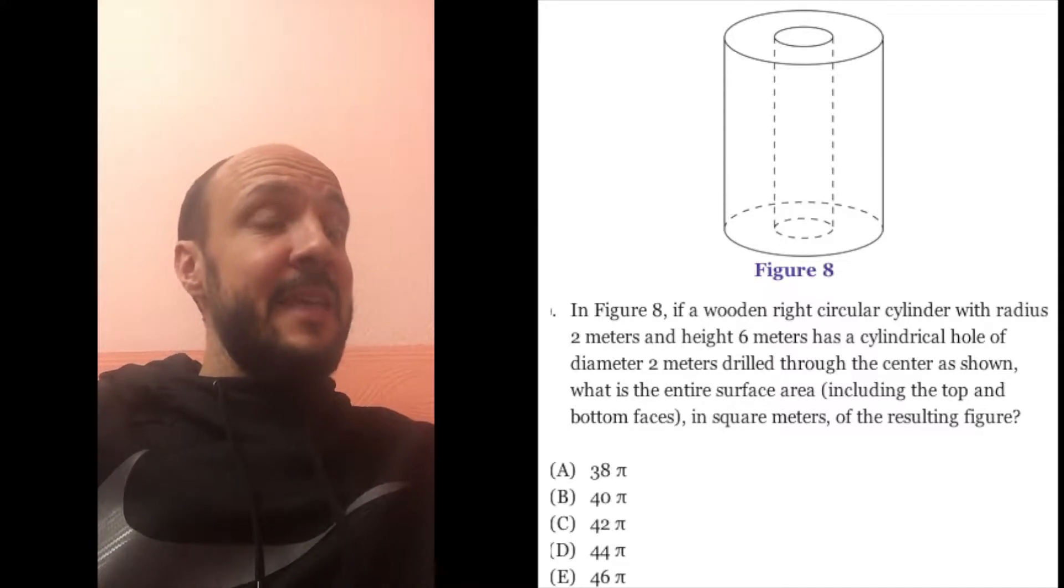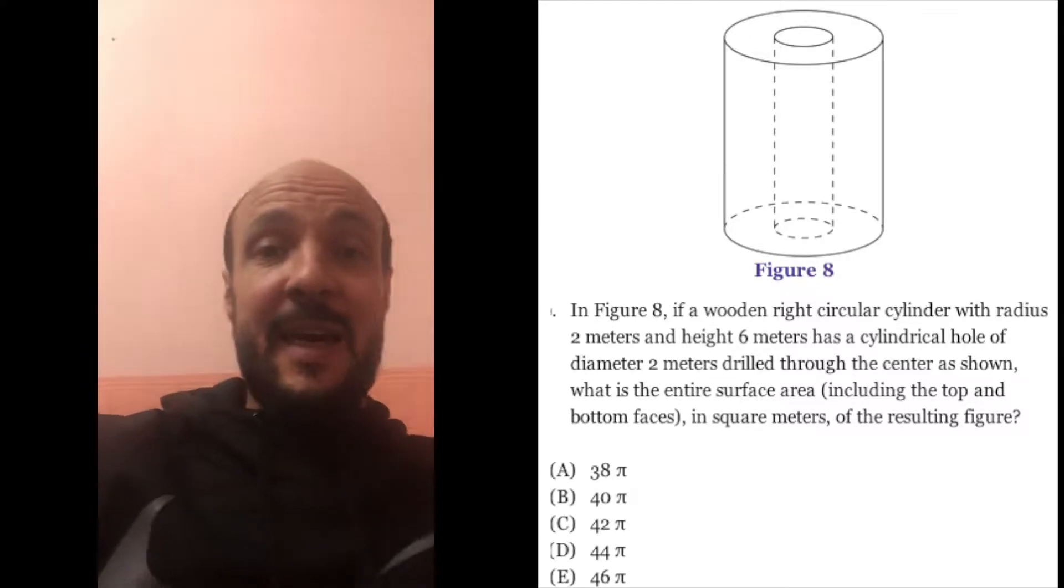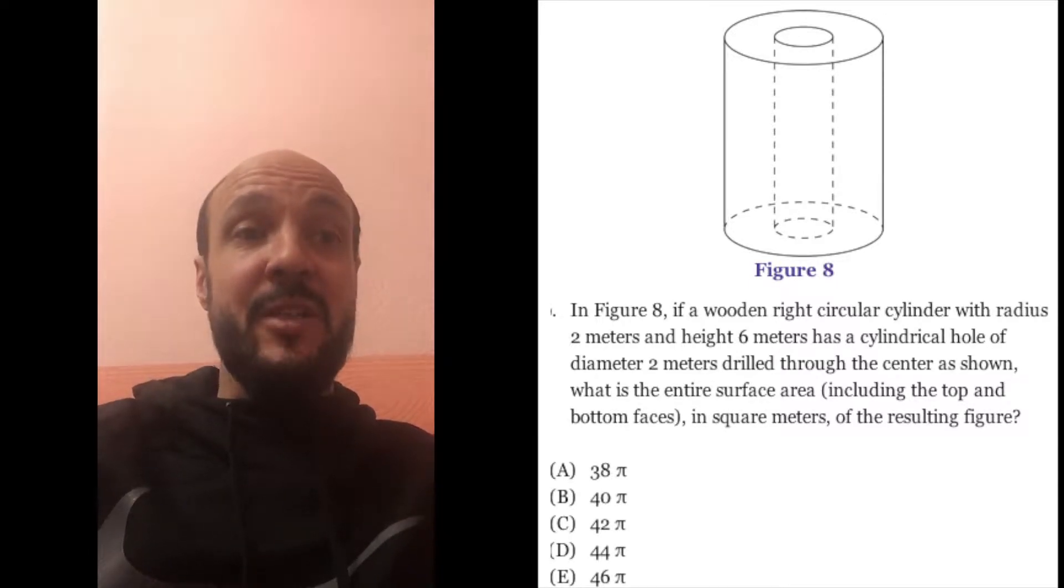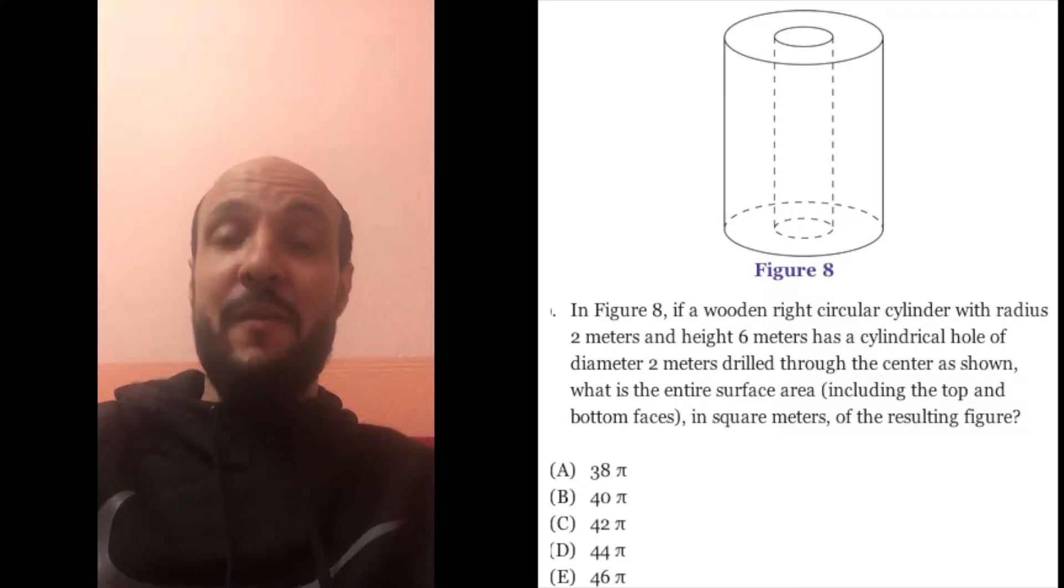In figure 8, if a wooden right circular cylinder with radius 2 metres and height 6 metres has a cylindrical hole of diameter 2 metres drilled through the centre as shown, what is the entire surface area including top and bottom faces in square metres of the resulting figure? A, 38 pi, B, 40 pi, C, 42 pi, D, 44 pi or E, 46 pi.